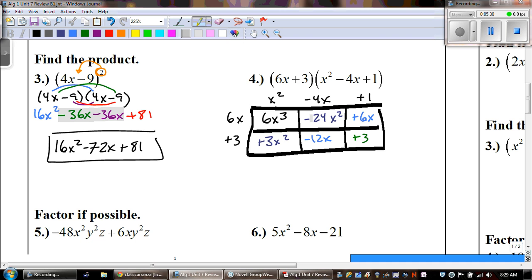And then 3 times 1 is positive 3. And now let's look for our like terms. We have the negative 24 and the positive 3x squared. And the negative 12 and the positive 6x. So, when we combine our like terms, we're left with a positive 6x cubed. Negative 24 and positive 3 gives us a negative 21x squared. Negative 12 and positive 6 is a negative 6x. And then the positive 3 is all by itself.